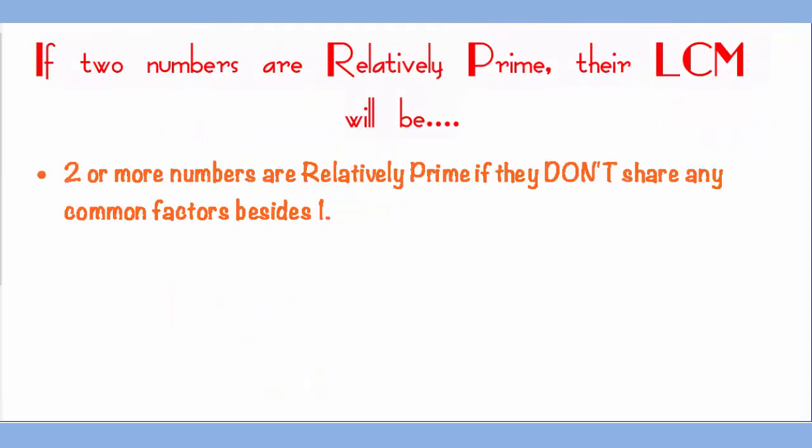What if two numbers are relatively prime? How does that help us to find LCM? First of all, two or more numbers are relatively prime if they don't share any common factor besides 1, such as 17 and 18, or 15 and 4, or 20 and 21. So let's say that I want to find the LCM of 20 and 21.